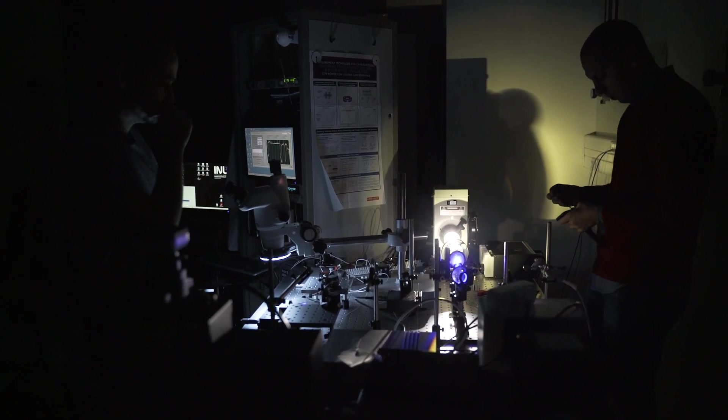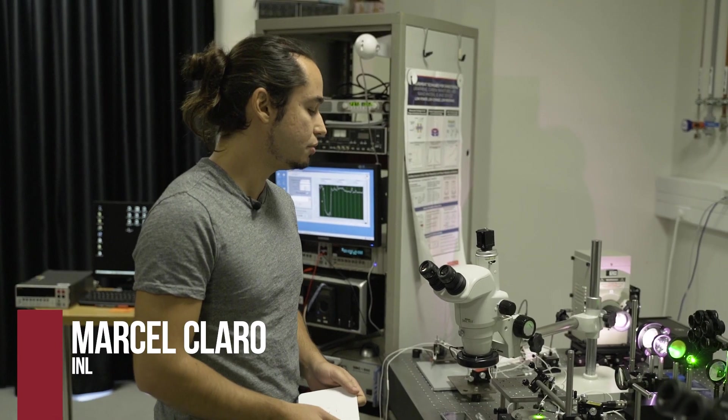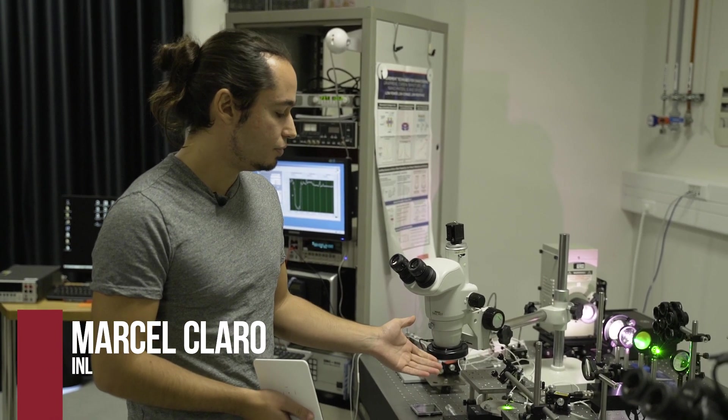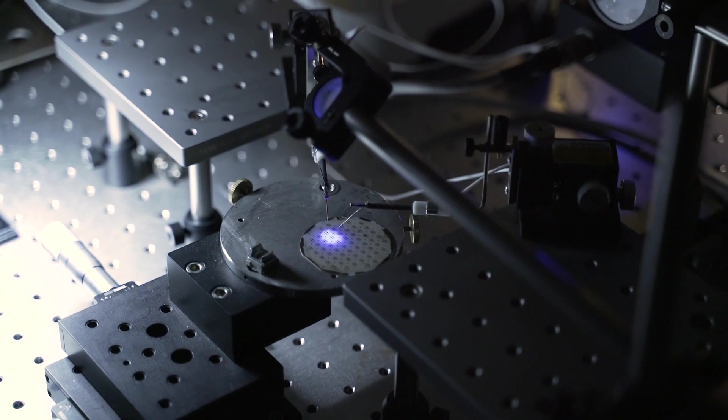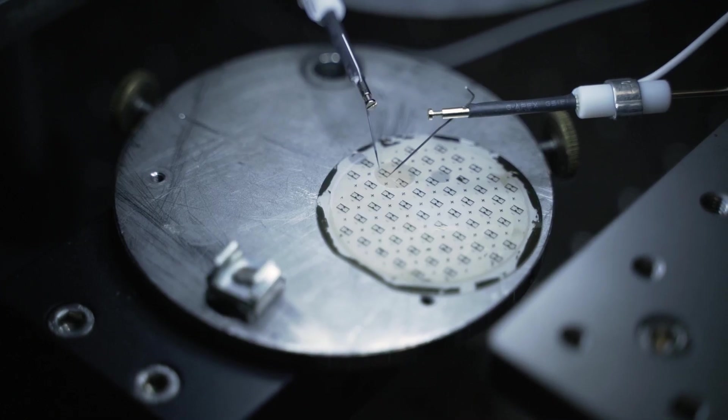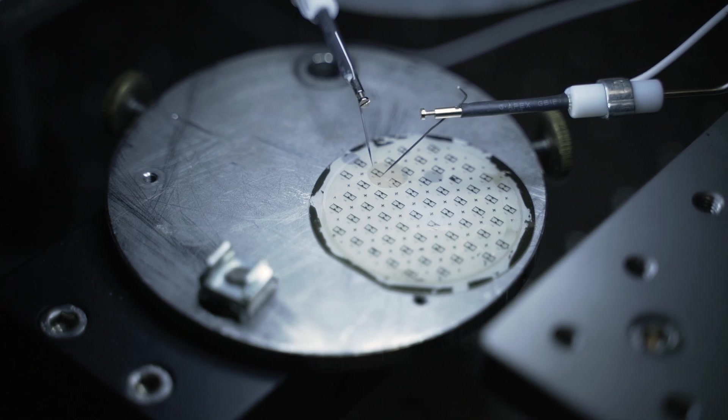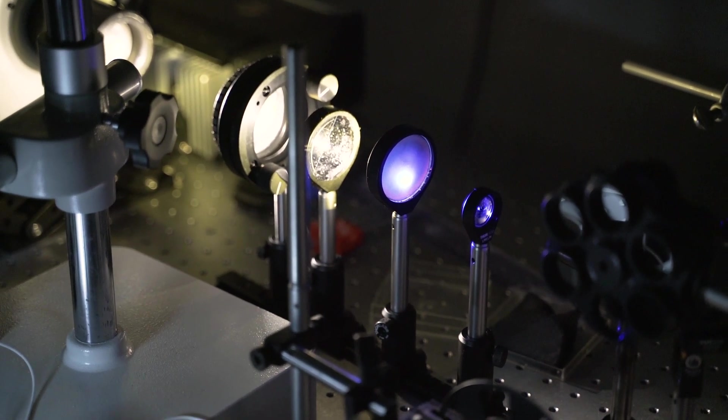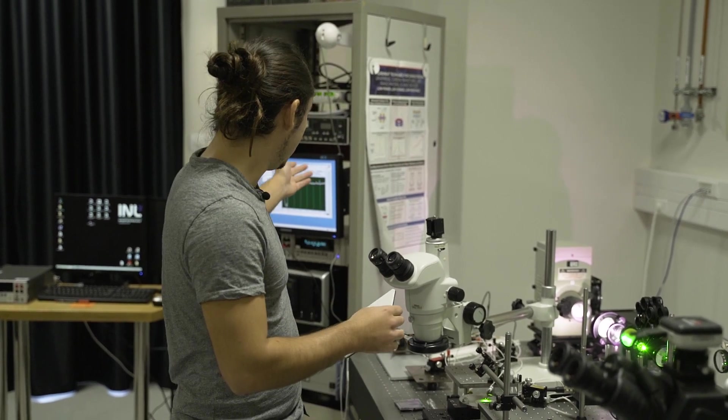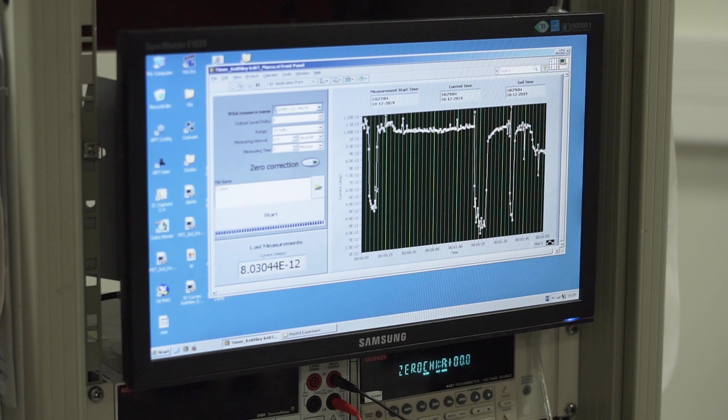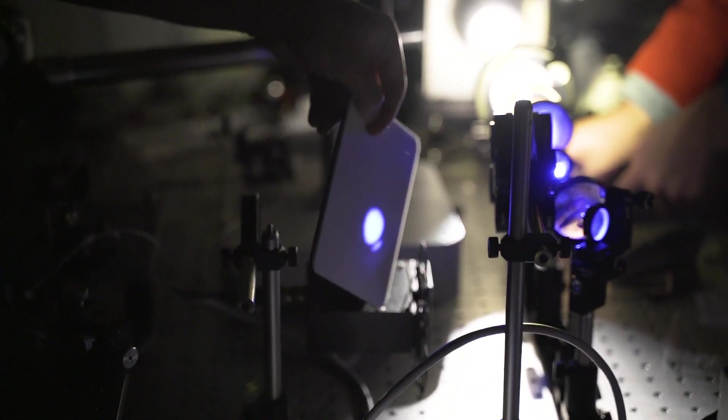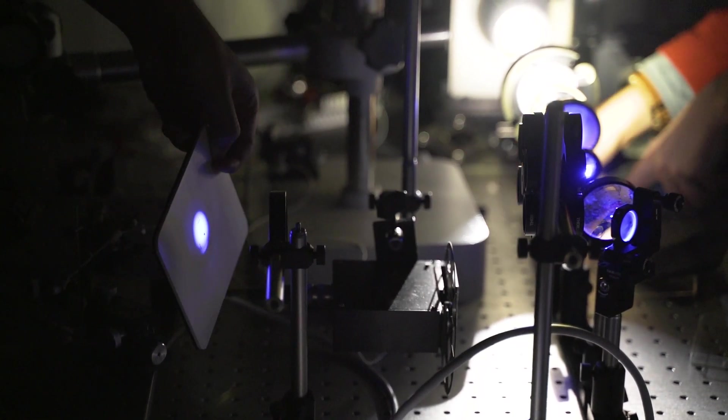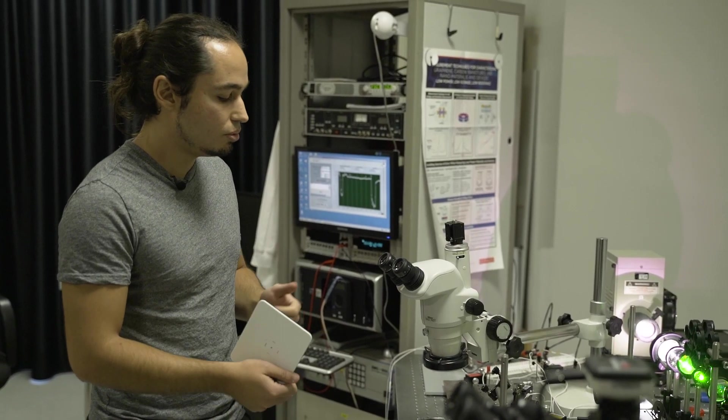Here in this lab, we do the electric characterization of our devices. This is one example of the detector that we did in a whole wafer, so it's several detectors in this wafer. Here we can shine light in different colors. As an example here, we can shine this green light, and then we measure some current there. And then when there is no light, this current drops a lot. So it's an example of the sensitivity of our detector to the light. This way we can look at the wafer that we want to and also try to improve our detector.